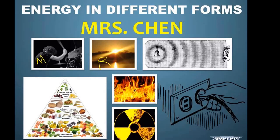Next we have sound energy. Sound energy is actually a form of mechanical energy, but it starts with a vibration in matter. If this bell were struck, it causes a vibration in the air, which sends out a sound wave that eventually hits somebody's eardrum, and your ear translates that into a sound your brain can understand. So sound energy is a form of mechanical energy that always starts with a vibration in matter.